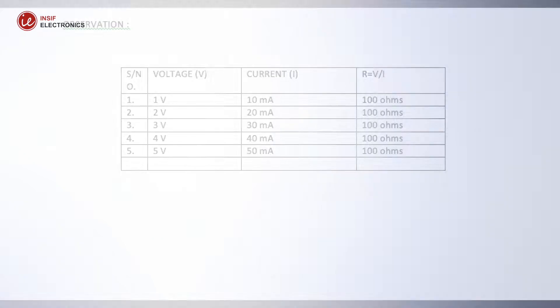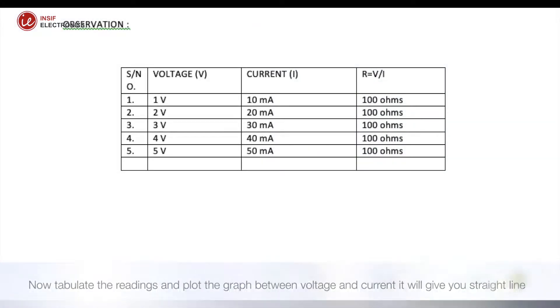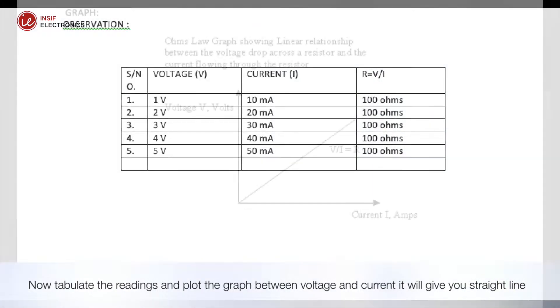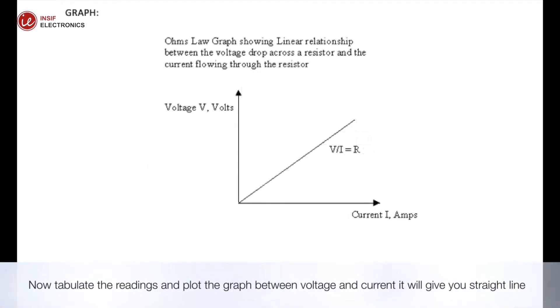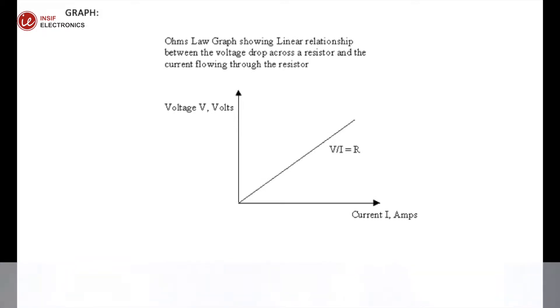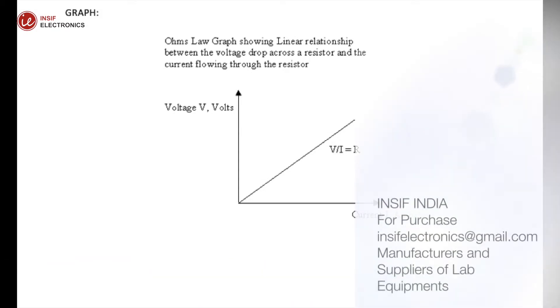Now, tabulate the readings and plot the graph between voltage and current — it will give you a straight line. Ohm's law has been verified.